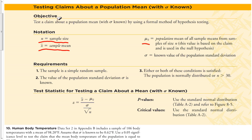The test statistic we're going to use: previously we used p-hat minus p over the square root of p times q over n. But now, since we're doing means, we use x-bar minus mu of x-bar, divided by sigma over the square root of n.